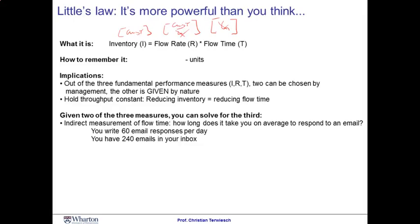The second thing we do with Little's Law is that we often find we know two of the performance measures in a process, but it's hard to observe the third one. Little's Law can help us compute the third measure from the two known ones. Typically in a process, flow rate and inventory are relatively easy to observe. Flow time, in contrast, is not.